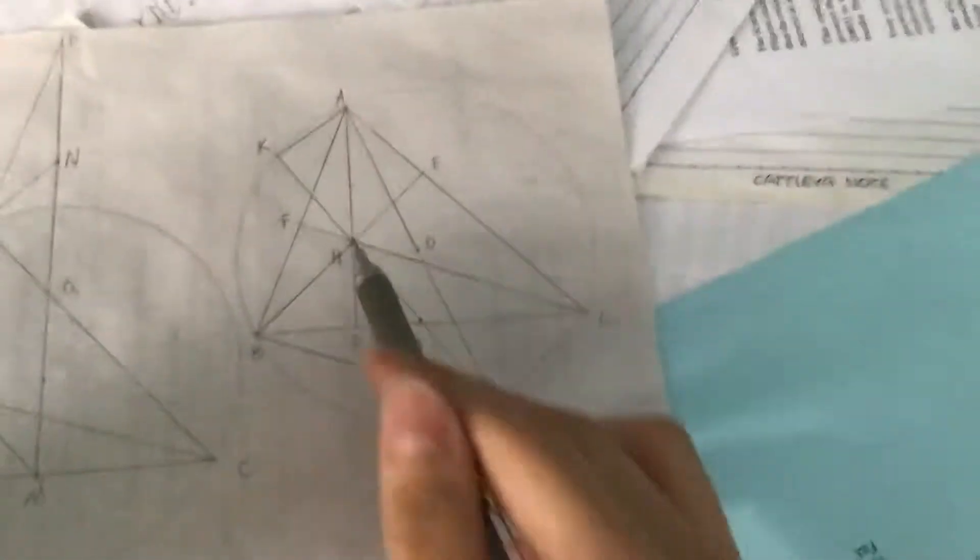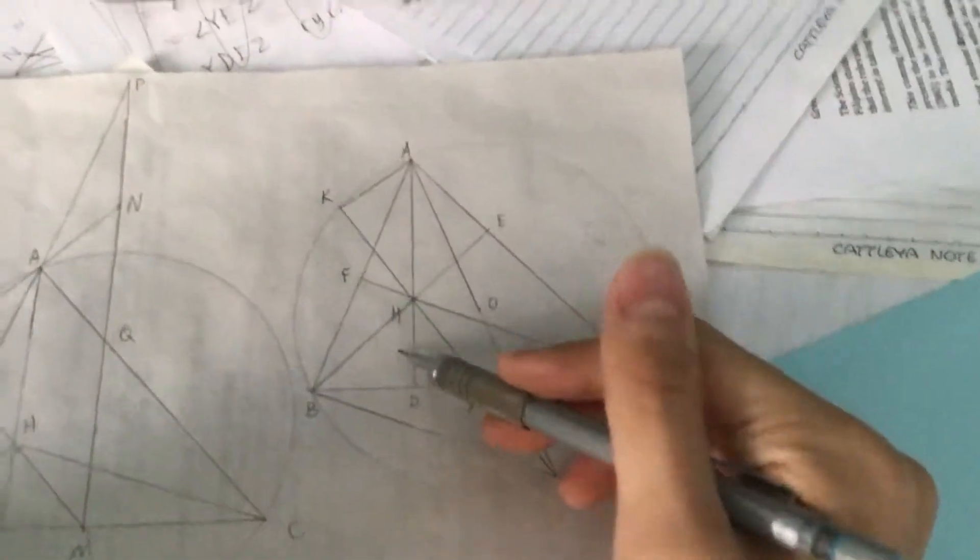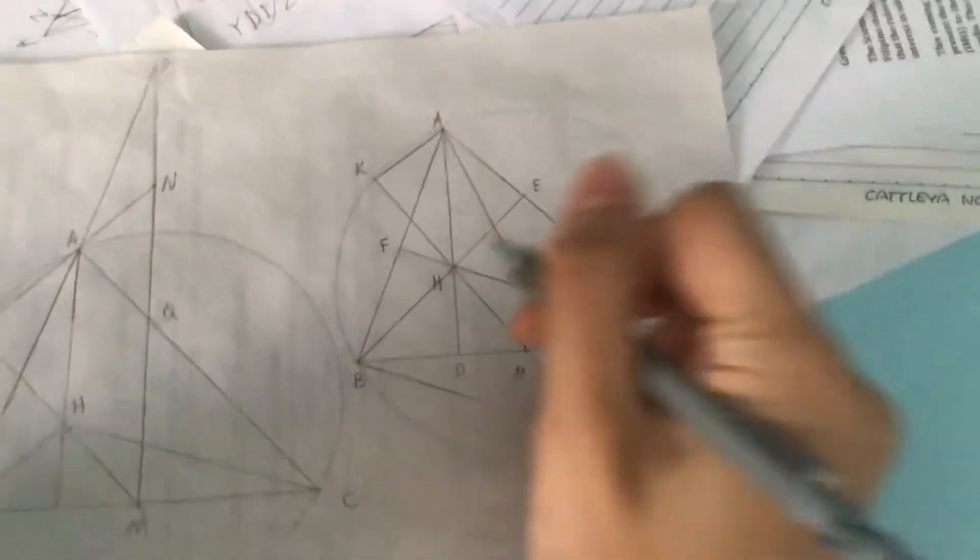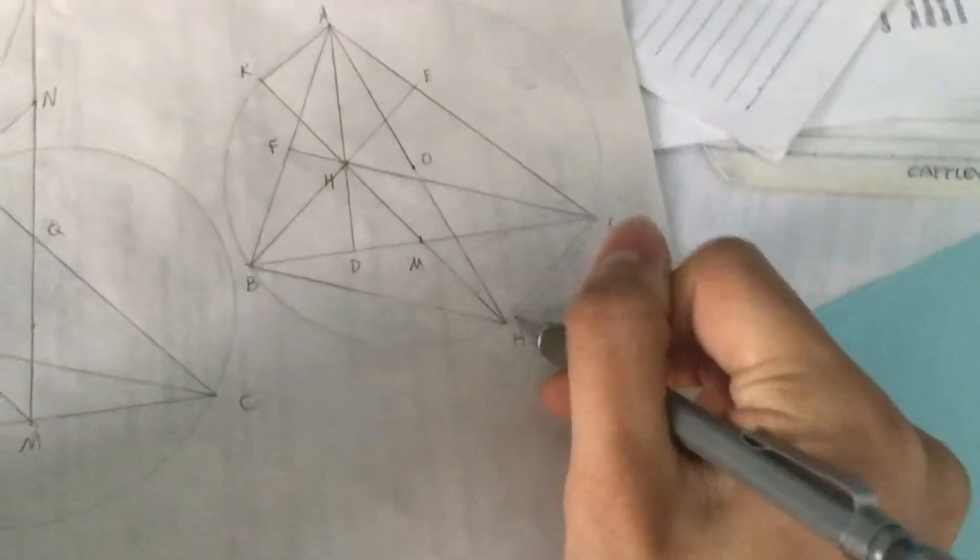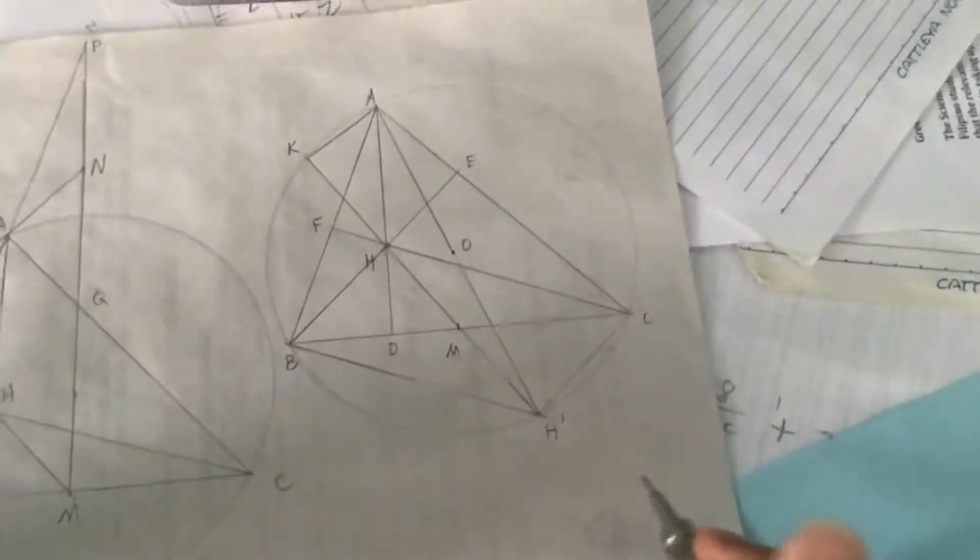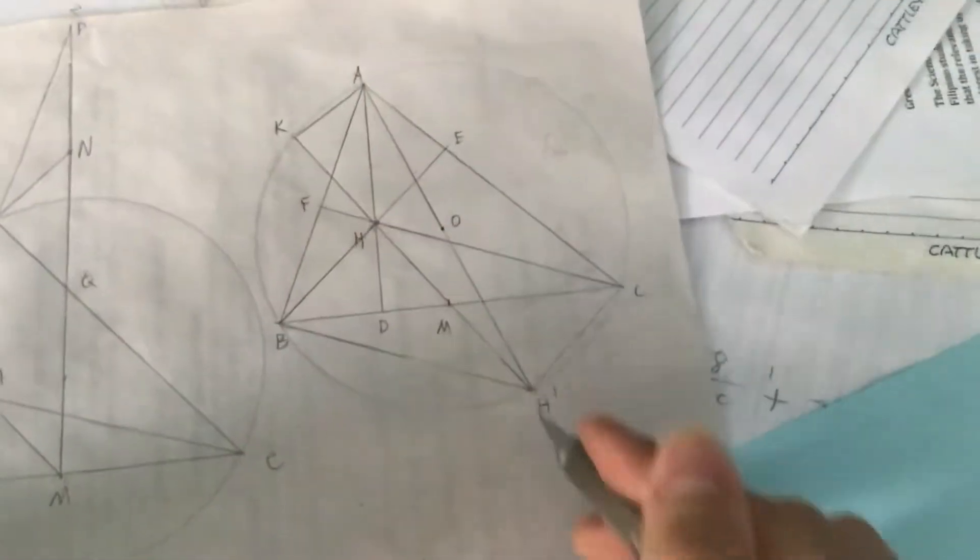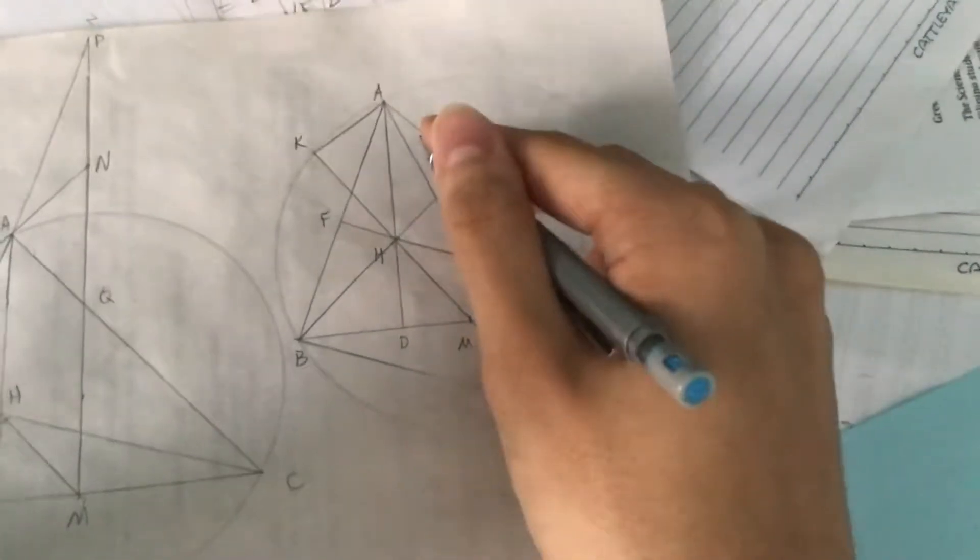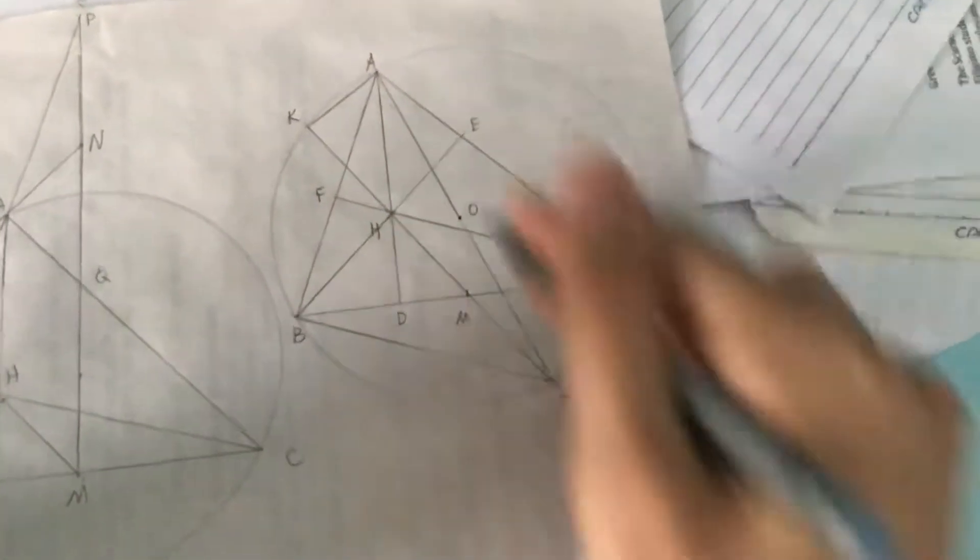I drew in a more complete diagram here. So it's a well-known property that if you have the orthocenter and you reflect it about the midpoint, then this point, let's call it H prime, lies on the circumcircle of triangle ABC. And AH prime is going to be a diameter, passes through the center right there.